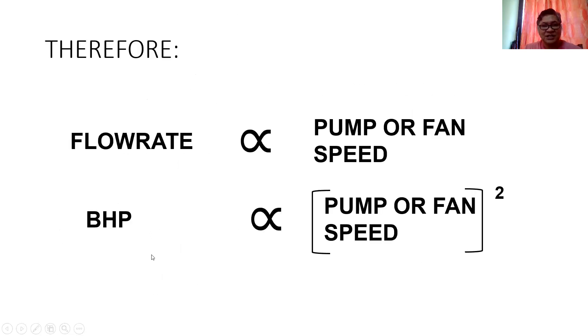By this function, we can say that flow rate is directly proportional to pump or fan speed. The brake power is directly proportional to the cube of the pump or fan speed.